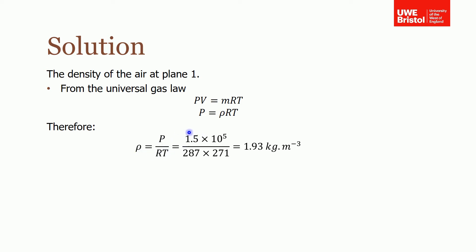The pressure is 1.5 times 10 to the 5 pascals. From the steam tables, the gas constant for air is 287, times the temperature, remembering to convert to Kelvin. Working this out gives a density of 1.93 kilograms per metre cubed.